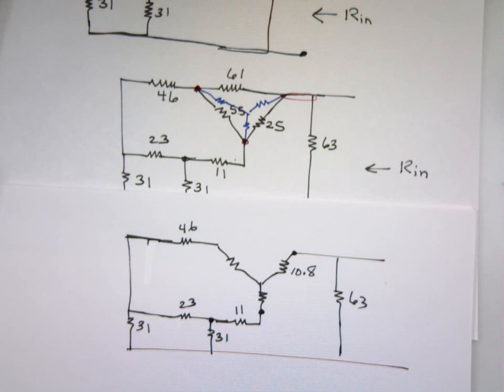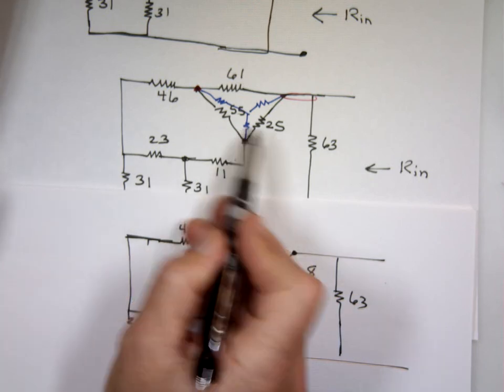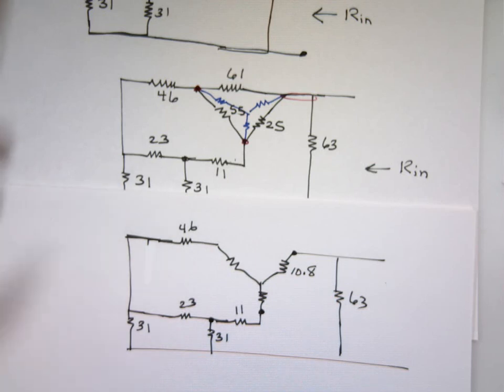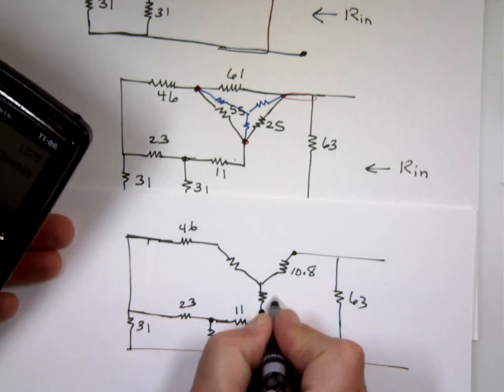The bottom one. 25 times 55 divided by 141. 25 times 55 divided by 141. 9.75.